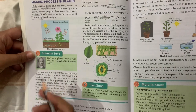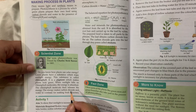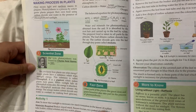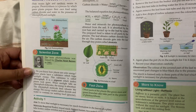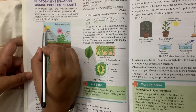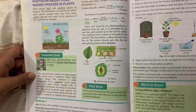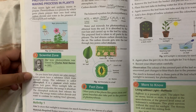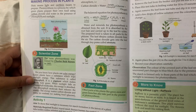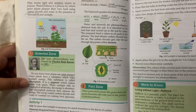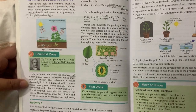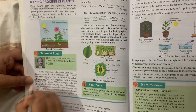This photosynthesis word was coined in 1883. Do you know how plants use solar energy? Solar energy means sunlight. Green plants have a substance that traps this energy. This substance is chlorophyll.